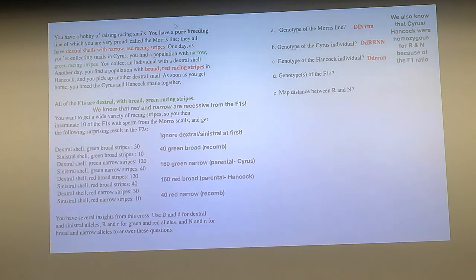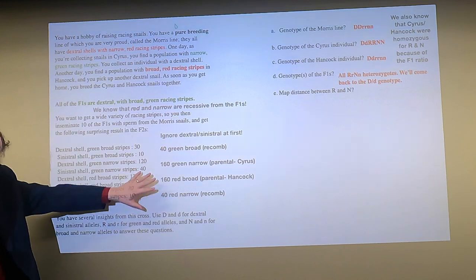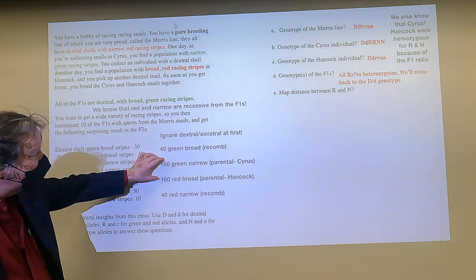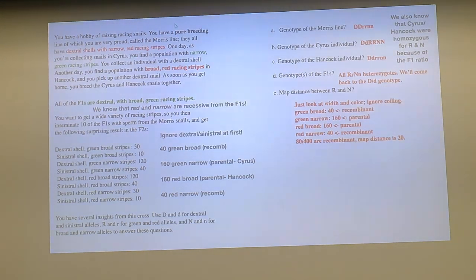They're both heterozygous so we end up with heterozygous F1s. Then the genotype of the F1, they all have to be big R, little r, big N, little N. And then we can just look over here at these numbers and figure out the map distance, right? This has to be recombinant, this has to be recombinant, these have to be the parentals, and that means the frequency of recombination is 80 out of 400. So we know the map distance has to be 20.